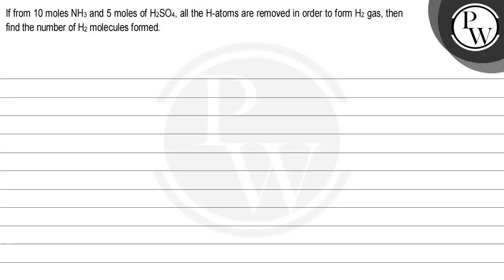Hello Bachcho, let's read the question. The question says, if from 10 moles of NH3 and 5 moles of H2SO4, all the H atoms are removed in order to form H2 gas, then find the number of H2 molecules formed.